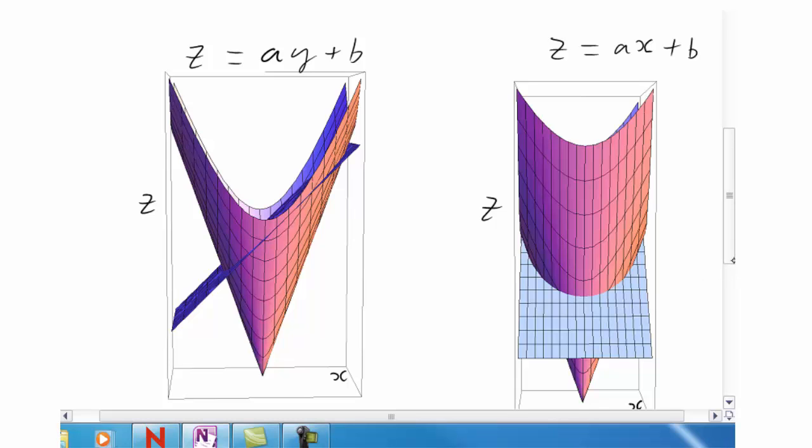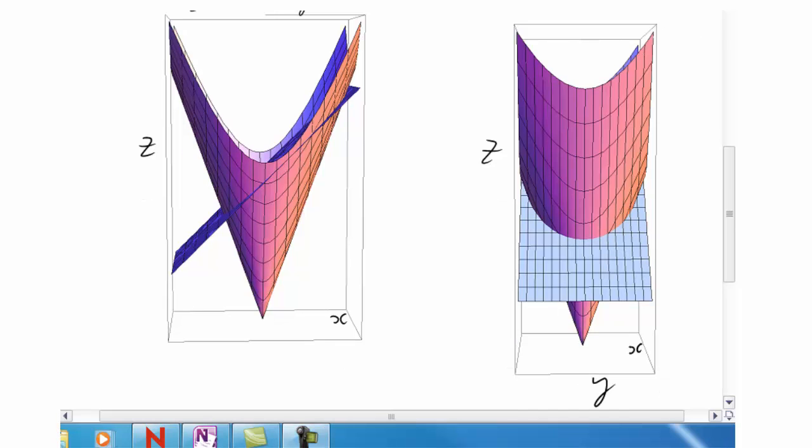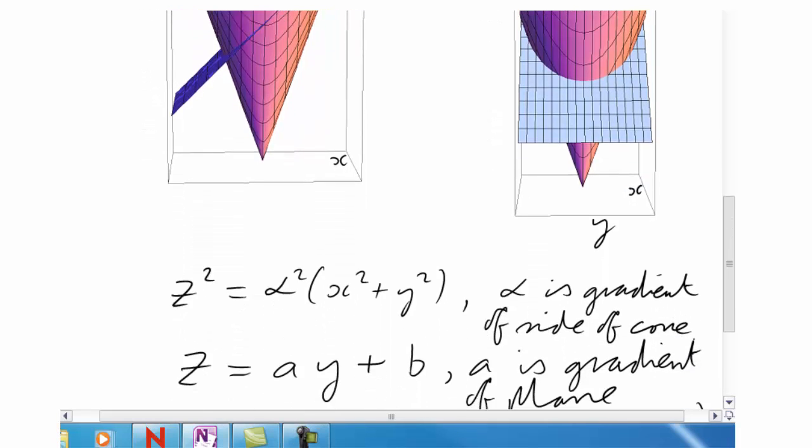However, that picture actually is z equals ax plus b. You see that because the cone is circular, rotating the plane doesn't really make any difference. A plane that relates z with x and y would be intermediate between these two, but it would still cut the cone in exactly the same way. I'm therefore going to make life simpler for myself by using just ay plus b on the right-hand side. Notice that the gradient of that plane, as viewed from the side, is then just the parameter a.